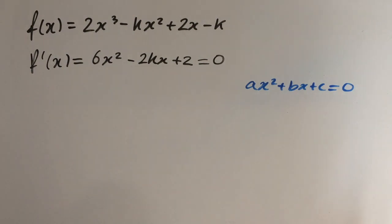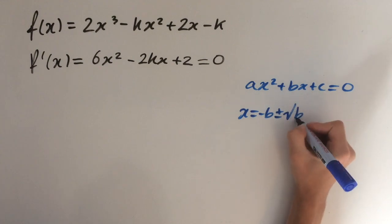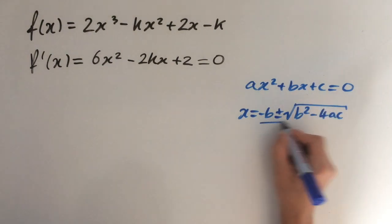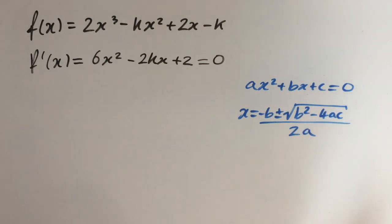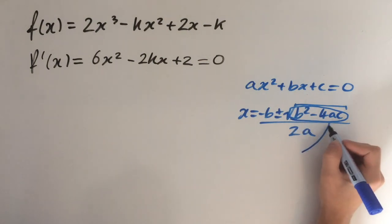This is x = (-b ± √(b² - 4ac)) / 2a. What we're interested in here is the part under the square root. This is called the discriminant.